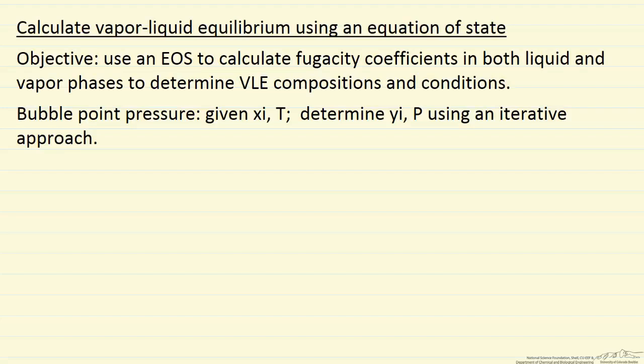The particular example we'll look at is the bubble point pressure calculation. Namely, if we're given the mole fractions in the liquid phase, xi, and we're given the temperature of the system, we want to determine the mole fractions in the vapor phase, yi, and the pressure of the system, and we'll do this with an iterative approach.